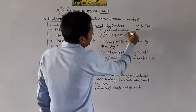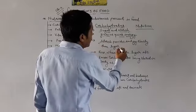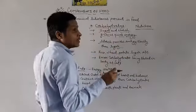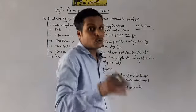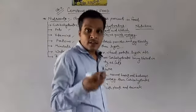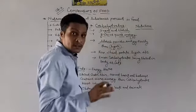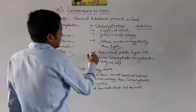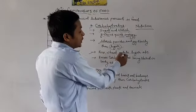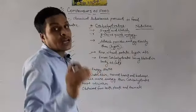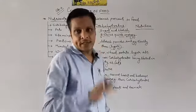यहाँ पर दो चीज़े हैं: एक sugar है और एक starch है. दोनों को compare किया तो पाया कि starch हमें energy provide करता तो है, लेकिन sugar से slow करता है. यानि दोनों में से sugar सबसे तेजी से instantly energy provide करेगा. Some examples of carbohydrates are rice, wheat, potatoes, sugar — इन food items से हमको carbohydrates मिलते हैं.